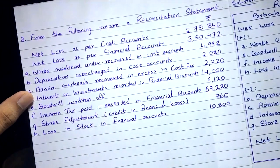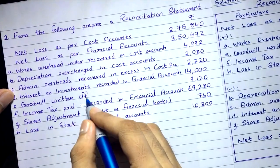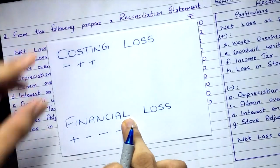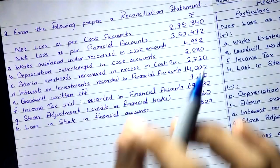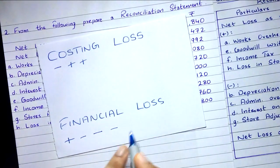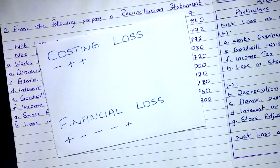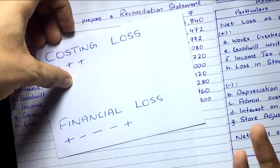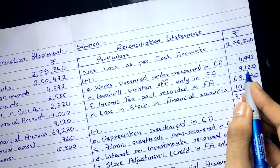Transaction E: goodwill written off. This is also a purely financial item — it is only recorded in financial accounts. Goodwill written off is an expense. Expense recorded in financial accounts means our loss will be more — positive relationship. The impact on financial loss is plus. So this transaction is added. Goodwill written off, only in financial accounts: 9,120.